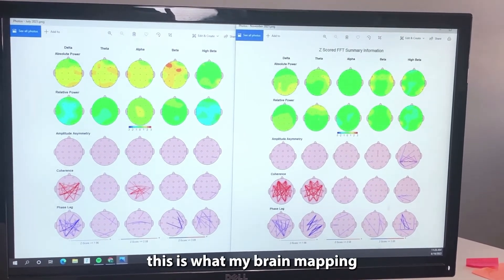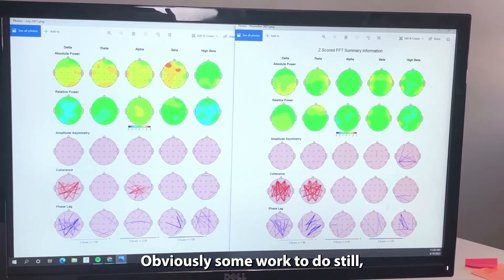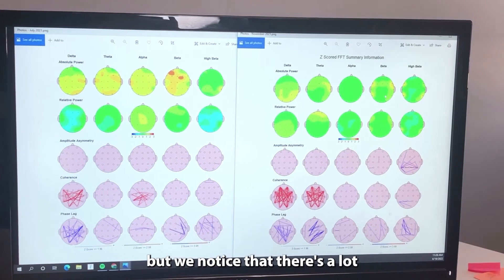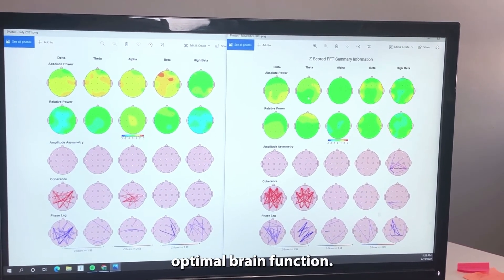After 15 sessions of IASIS, this is what my brain mapping looks like now. Obviously some work to do still, but we noticed that there's a lot less yellow and orange and blues, and there's a lot more optimal brain function.